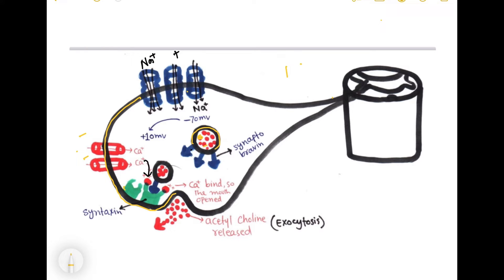This is the synaptic vesicle. Inside it, there are a large number of acetylcholine molecules. Acetylcholine is a neurotransmitter mainly responsible for the transmission of nerve impulses across the neuromuscular junction.